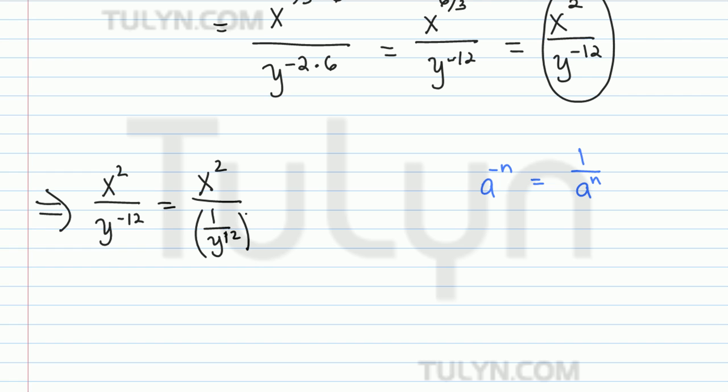And then distributing, multiplying in, this becomes x squared times y to the 12th power. So this is the final form of our simplification and the best form that doesn't have any negative exponents.